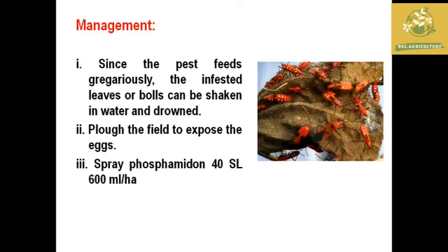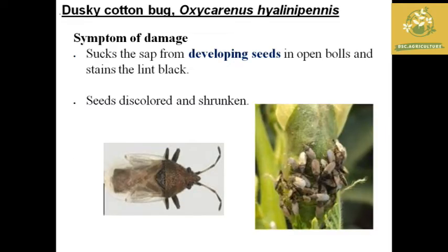The bacteria Nematospora gossypii causes a dark, briny, blackish appearance with water-soaked symptoms on the field. Management practices for red cotton bug include shaking infested bolls in water and drowning them, and deep plowing to expose eggs. The final management is spraying profenofos 40 SL at 600 ml per hectare.